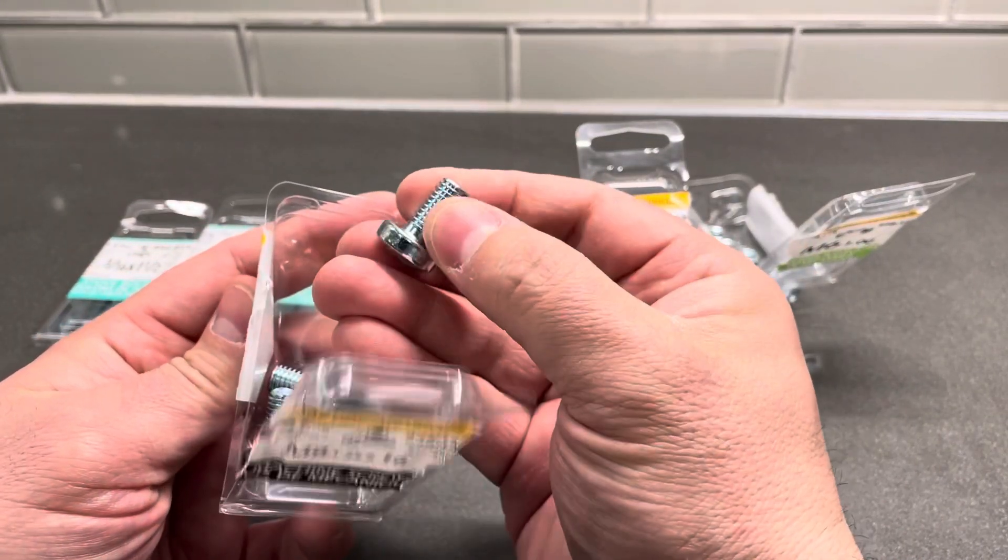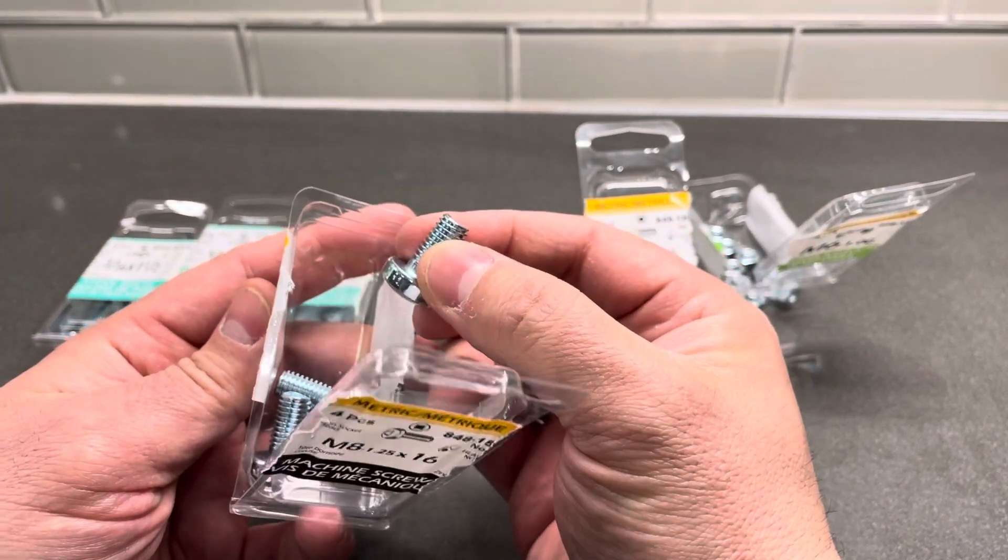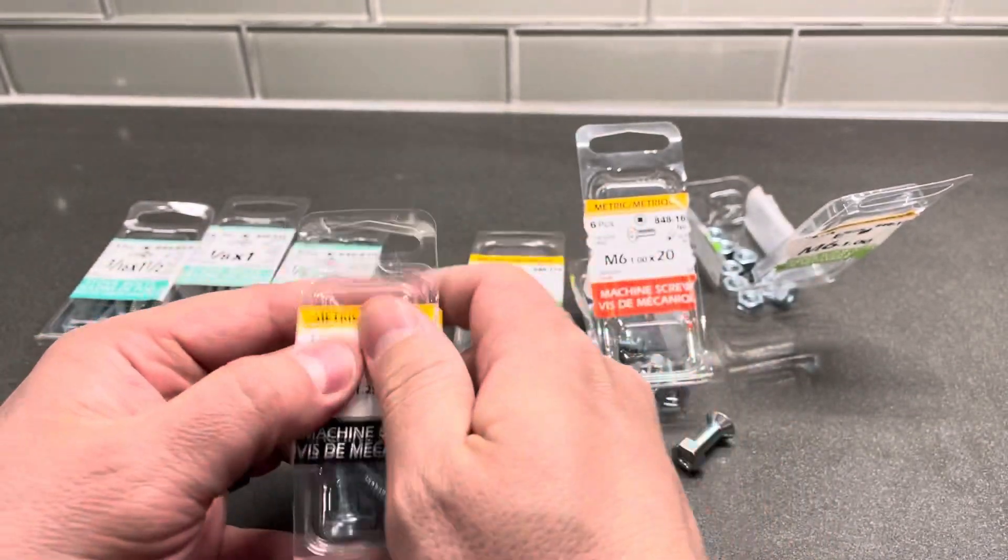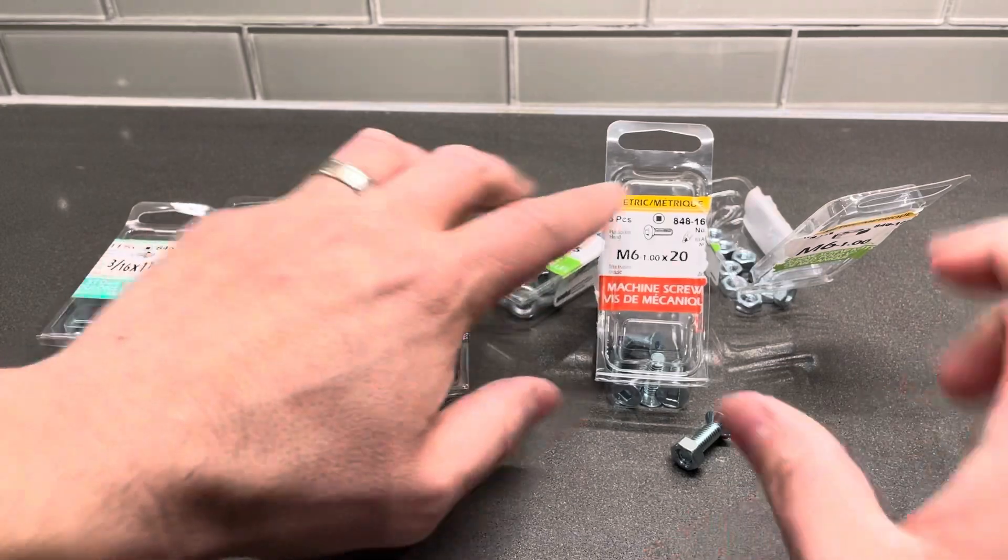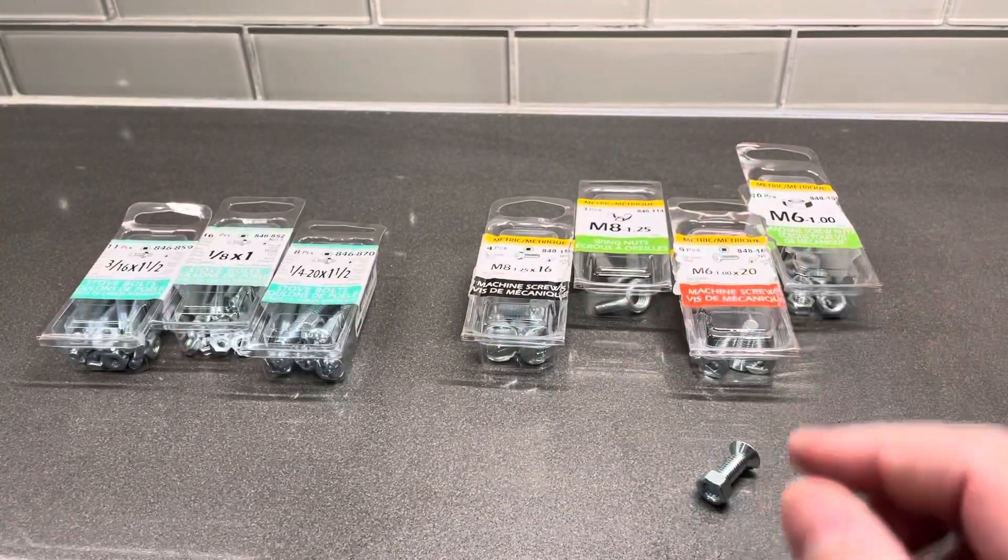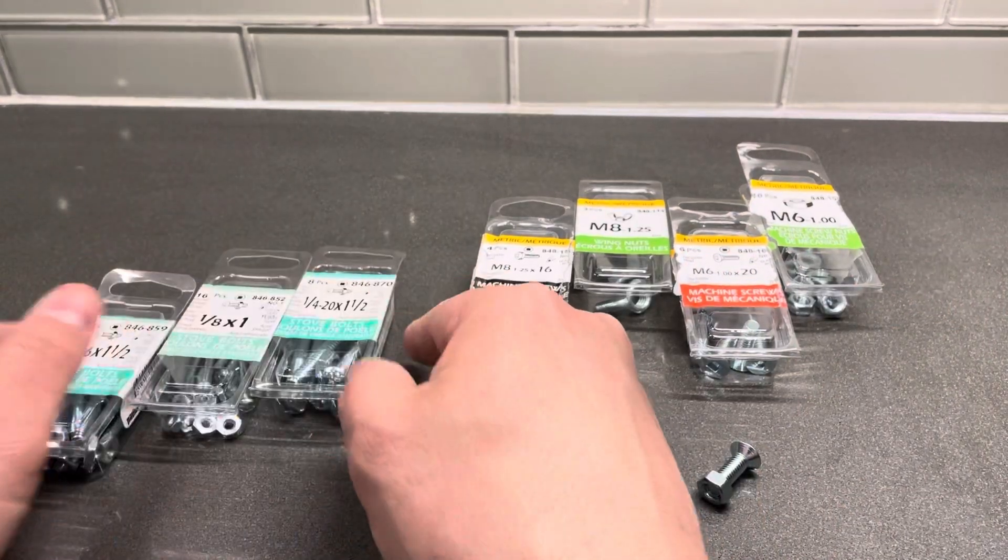So 16 millimeters is 1.6 centimeters. Everything's measured in millimeters. These are all metric and you can see we have M6 nuts and bolts and M8 nuts and bolts. The other version that you're going to see is imperial.